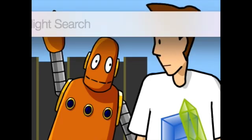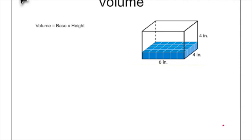Welcome to our video on volume. Volume is the amount of space an object takes up, or how much you can fill an object with unit cubes. Here we have a rectangular prism with a length of 6 inches, a width of 4 inches, and a height of 4 inches. We need to figure out the volume of this rectangular prism.